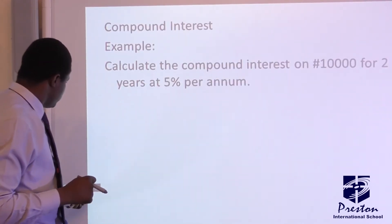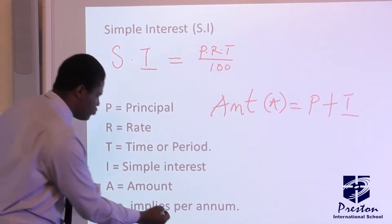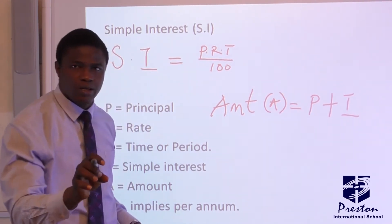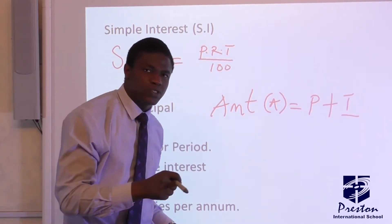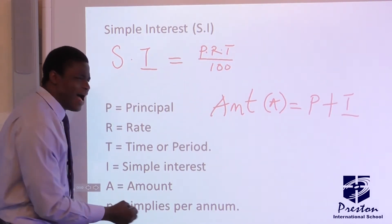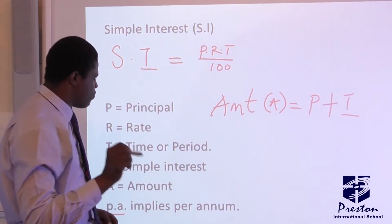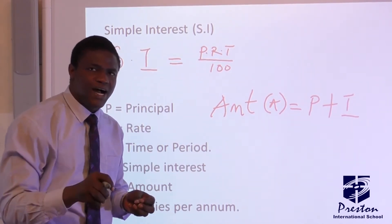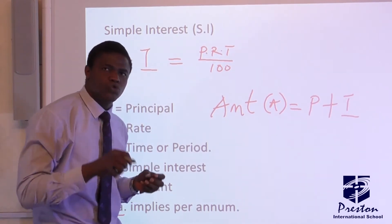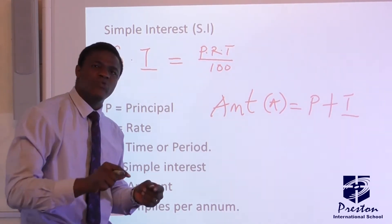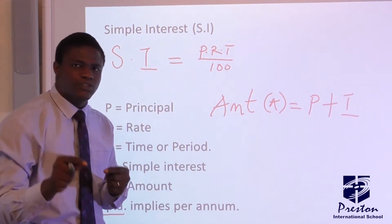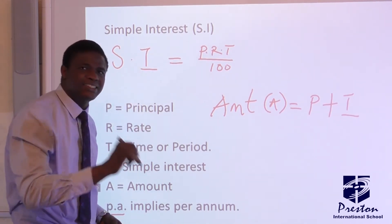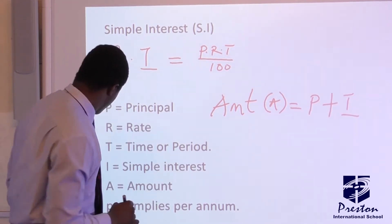And before we go, I want you to take note of this. PA implies per annum. There are some questions that it will be per week. We have some that it will be per month. But anytime you are given questions in per annum, at the end of the day, even if you are given your time in months, you must convert that month to years. Even if you are given it in weeks, you must convert it to years. That is the meaning of the per annum. So you must calculate your interest in times of year. So take note of that.